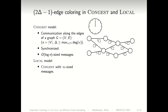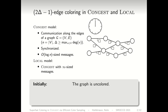That's the CONGEST model. The LOCAL model is exactly the same, except that the messages can be of arbitrary size. In this model, what we consider is colouring problems, and in particular, the 2Δ-1 edge colouring problem.